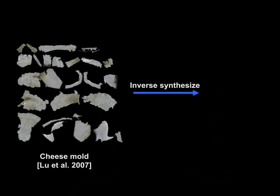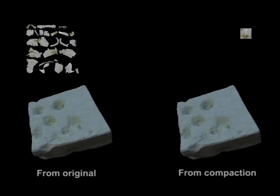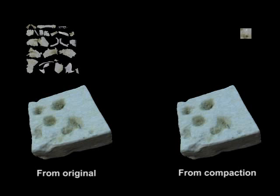For globally varying textures, the user can supply the control map to produce a desired result. Notice the similarity between results synthesized from the original and from our compaction. In this example, the user tunes the accessibility for cheese mold.